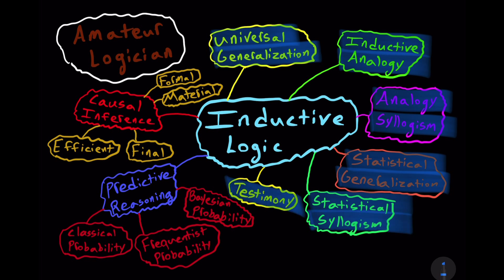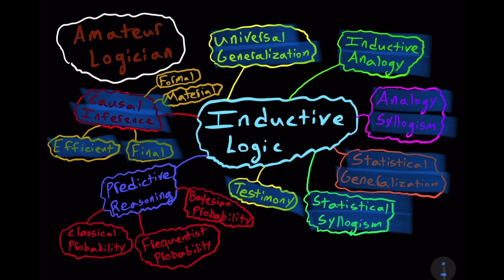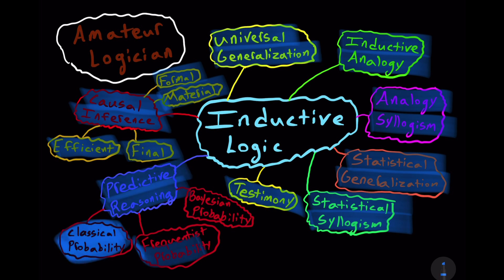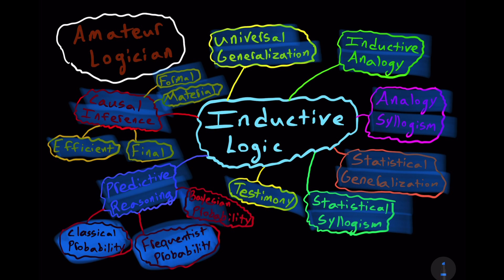In addition, we will briefly consider causal inference, which includes efficient, final, formal, and material causality. And finally, we will take a brief look at predictive reasoning, which includes classical probability, frequentist probability, and Bayesian probability.